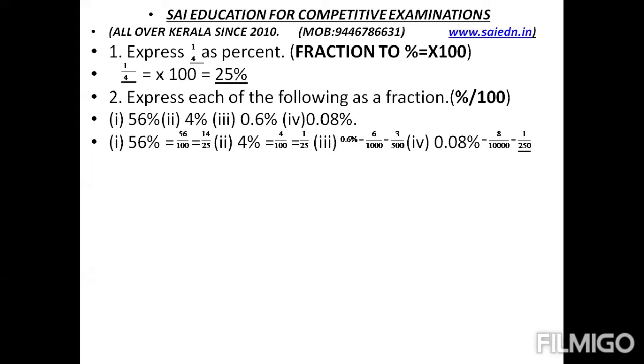For example, 56% means 56 divided by 100, which equals 14 by 25. 4% means 4 divided by 100, which equals 1 by 25.